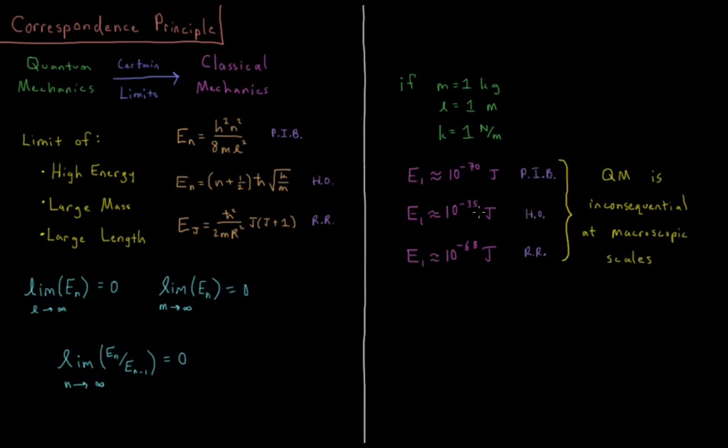For the harmonic oscillator, at large scales, we see that the first energy level would be 10 to the minus 35 joules. Again, very inconsequential, basically continuous from our perspective.